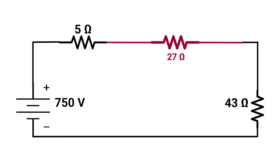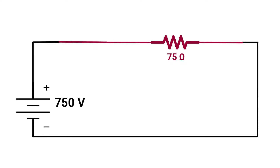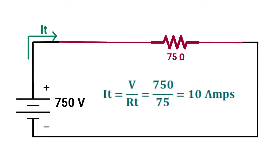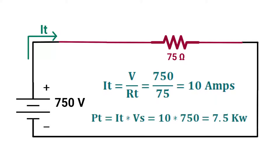Now we have two parallel resistors; those will equal 27 ohm. Our circuit is now simple — three series resistors. The total will equal 5 plus 27 plus 43, which will equal 75 ohm. Applying Ohm's law, I total will equal voltage over R total, which is 750 volts over 75 ohm, equaling 10 amps. Total power equals 10 amps times 750 volts, which equals 7.5 kilowatts.